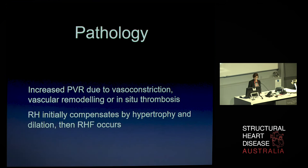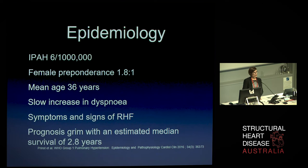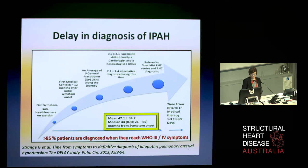The condition is rare, with a female preponderance, and the average age at diagnosis is 36. Presentation is nonspecific — patients present with fatigue, shortness of breath, possibly chest pain or arrhythmia — and the outlook is grim. Because symptoms and signs are relatively nonspecific, there's a long delay between patients initially developing symptoms and finally getting diagnosed. Referencing a paper by Jeff Strange, the average time is more than four years between initial symptoms and diagnosis.